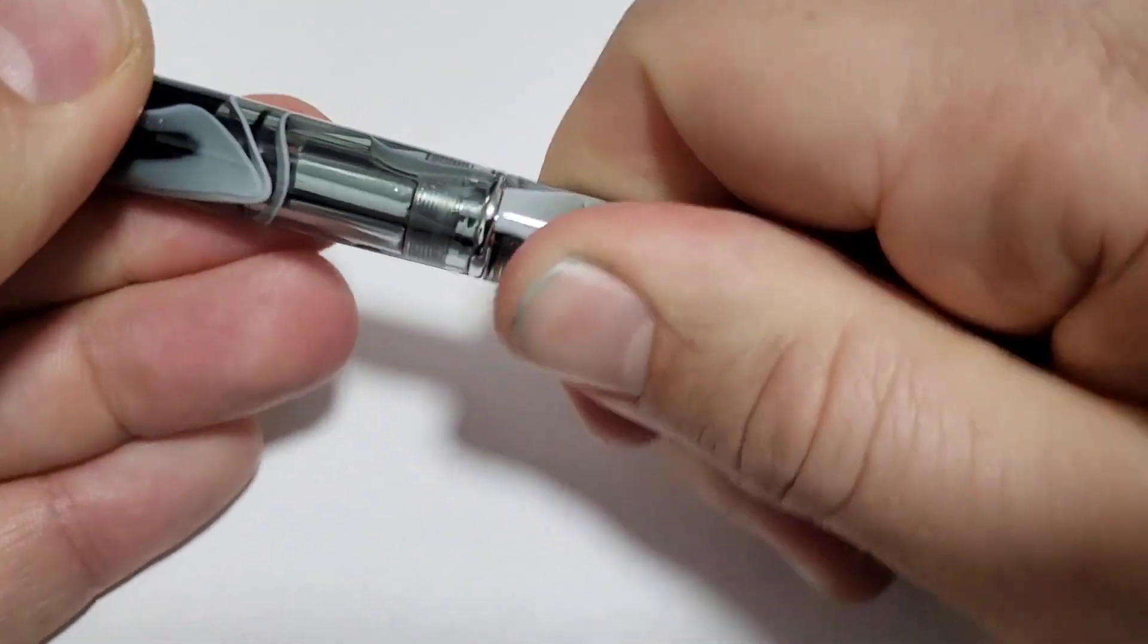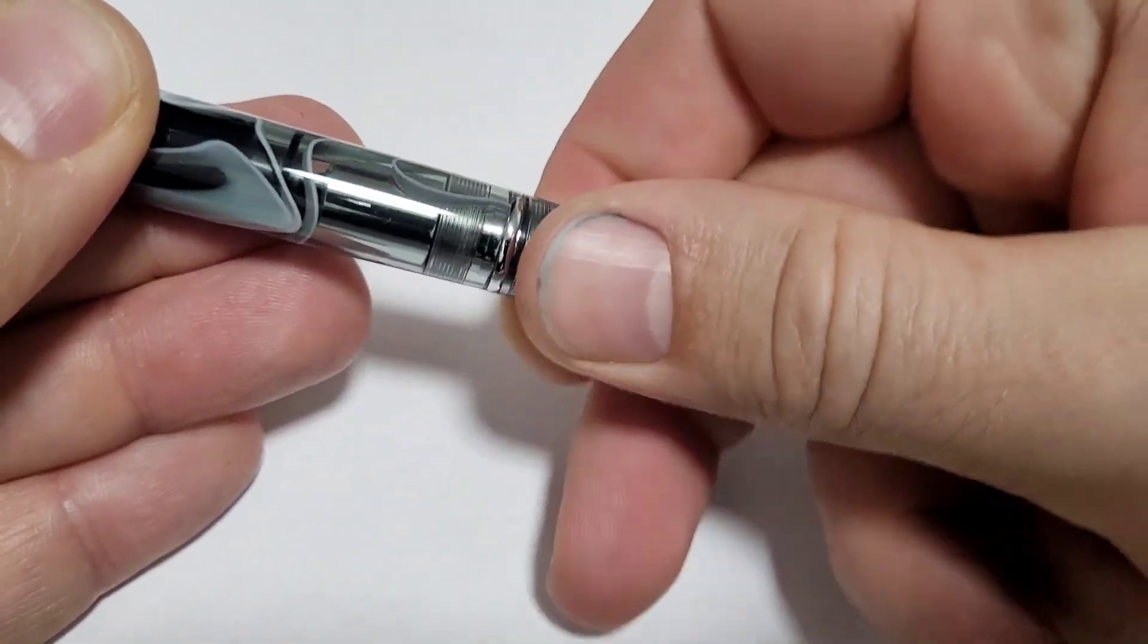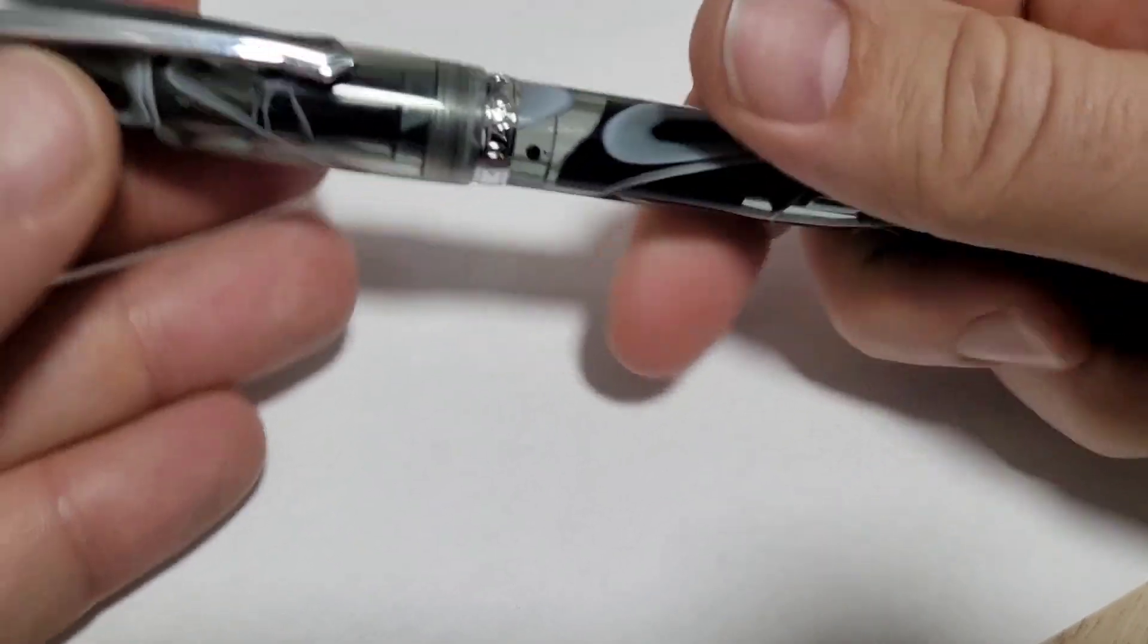Right now it's got some Noodler's black in it. I figured I better because Peter uses that quite a bit and I haven't bought any before so I ordered it with the pen as well. We're going to take it apart and give a closer look. It's a piston filler pen as well, we're going to take this apart and check it out, make sure it's all done nicely.